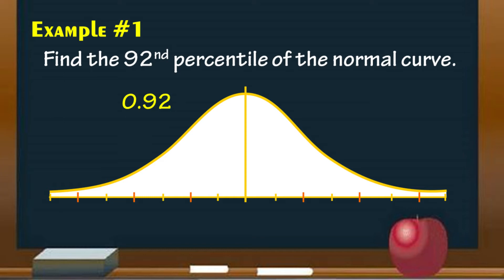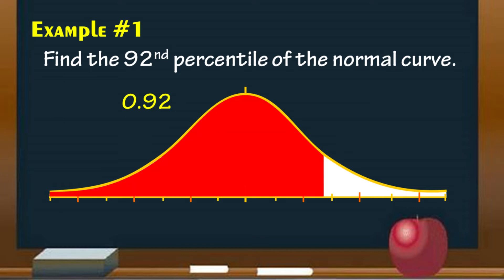Under the normal curve, approximately, this is the region or area that covers 0.92. It covers the first half of the curve which is 50% or 0.50 and 42% or 0.42 of the second half.